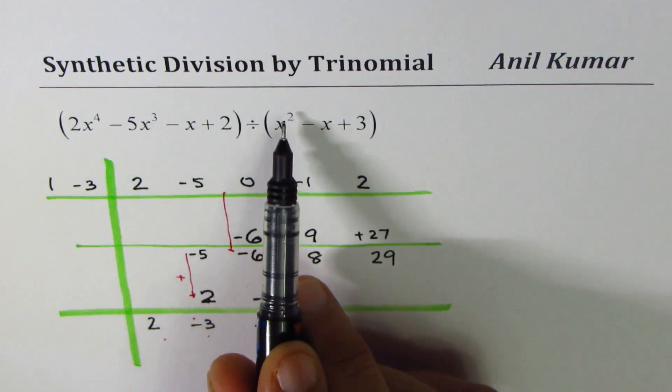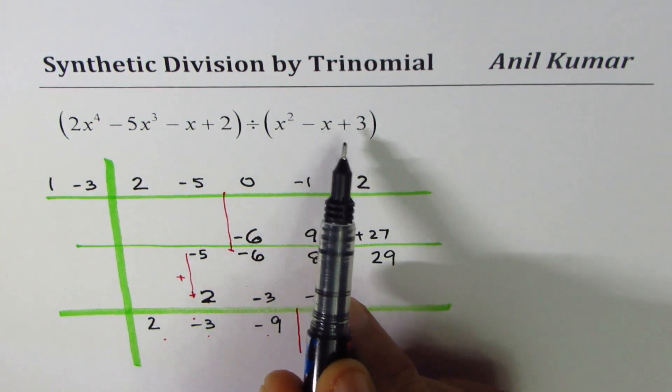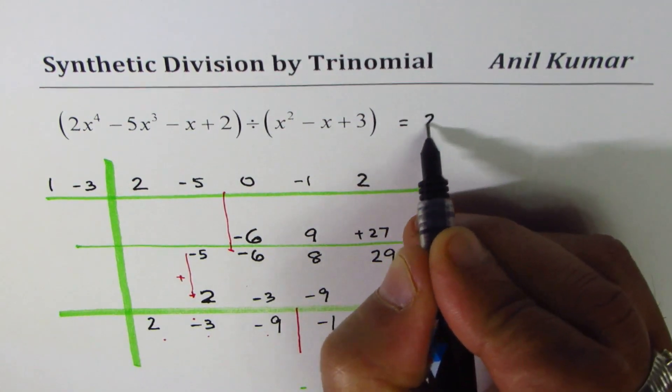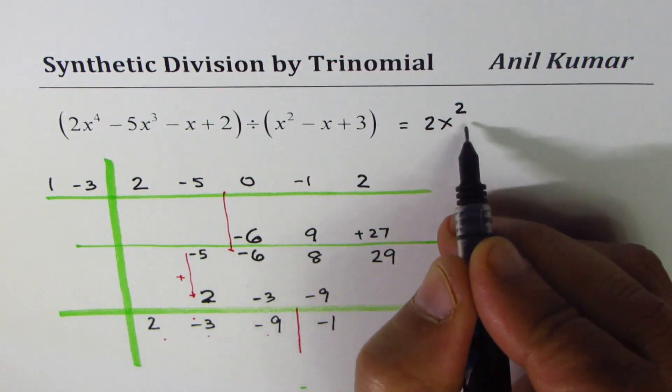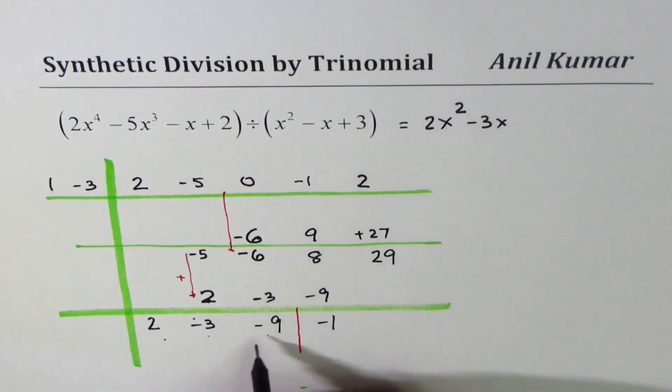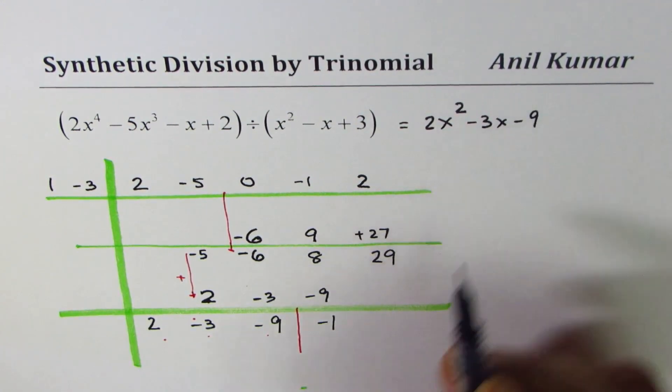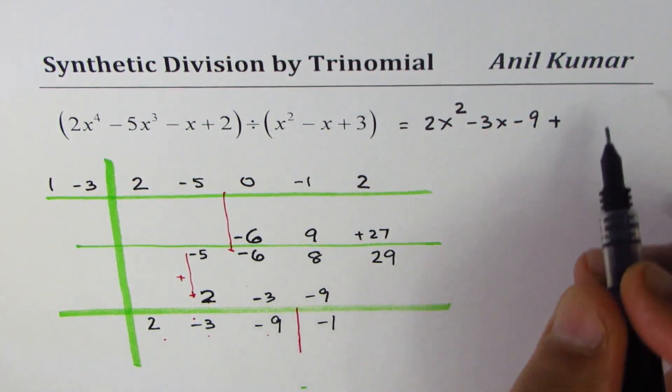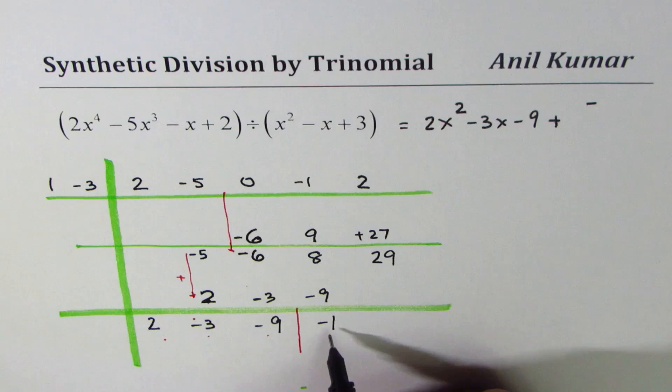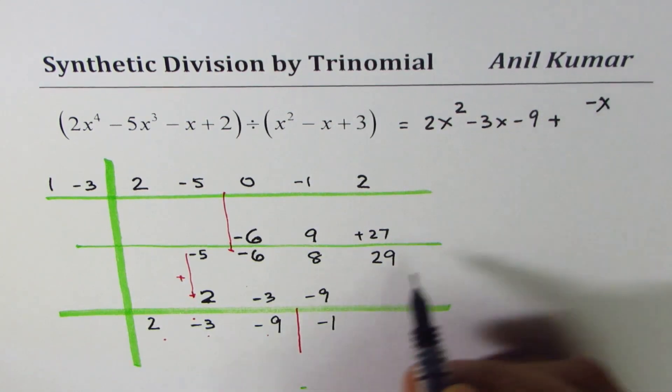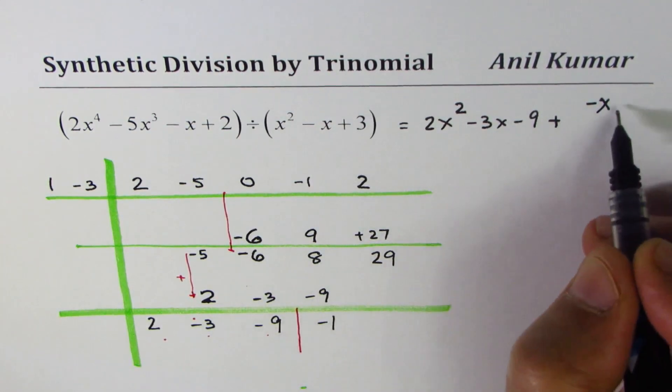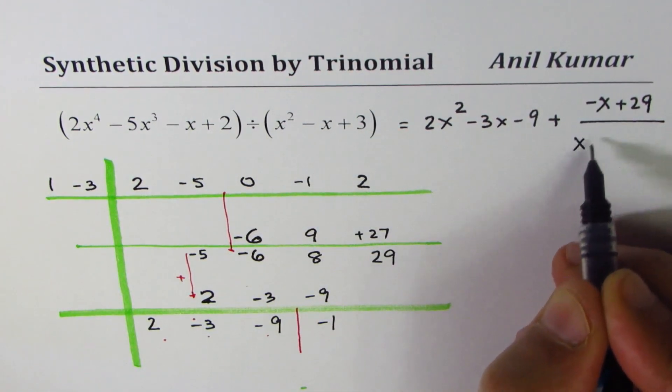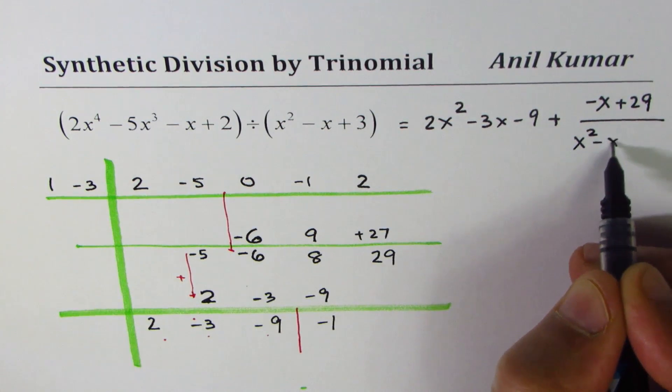We can now write that when you divide 2x to the power 4 minus 5x cubed minus x plus 2 by x squared minus x plus 3, you get a quotient of 2x squared minus 3x minus 9, and that's the remainder. Let me write this as plus here, and then we'll put minus x plus constant 29, divided by the divisor, which is x squared minus x plus 3.